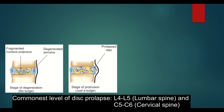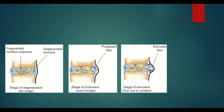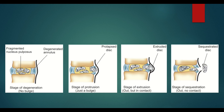As changes keep taking place, the bulging or protruded disc ultimately gets extruded from the annulus fibrosus. At this stage, the disc does not spontaneously reduce back to the parent disc — though it has contact with the parent disc, it does not return. The extruded disc comes to lie under the posterior longitudinal ligament, but the posterior longitudinal ligament is not strong enough to hold or prevent the extruded disc from further prolapse.